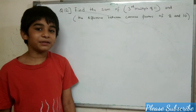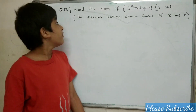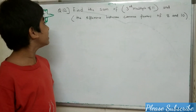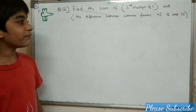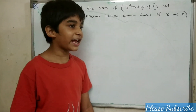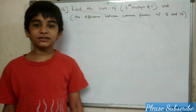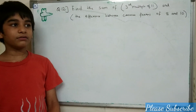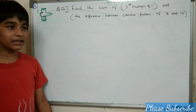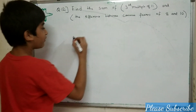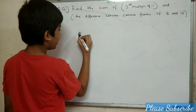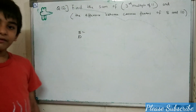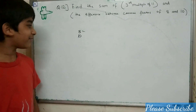This is question number 12. Find the sum of all multiples of 11 and the difference between common factors of 8 and 10. Factor means multiplication of a number to get another number. First we will find the factors of 8.